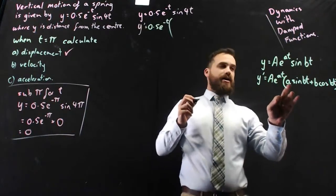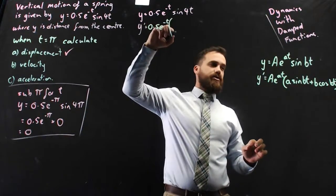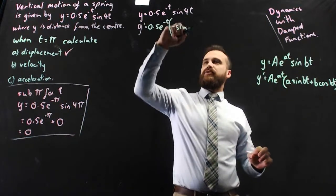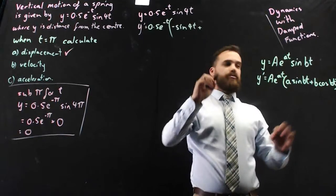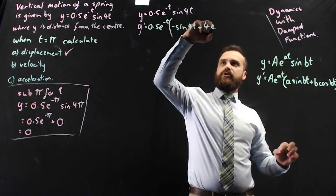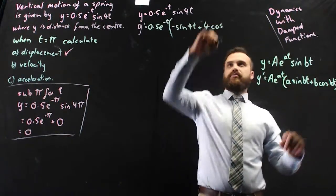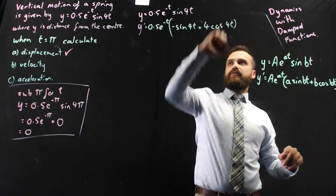Now it's a, so it's negative 1, so negative sine 4t plus b, which is 4, cos 4t.